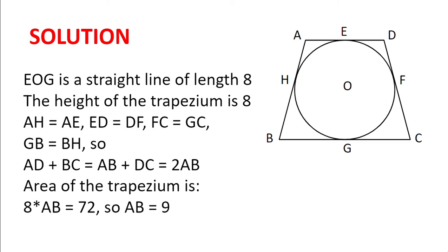So now, using the fact that the area of the trapezium is half of AD plus BC multiplied by the height, we find the area of the trapezium to be 8 multiplied by 2AB divided by 2, which simplifies to 8AB.